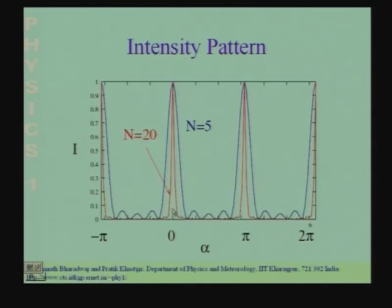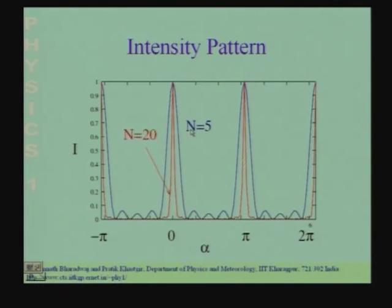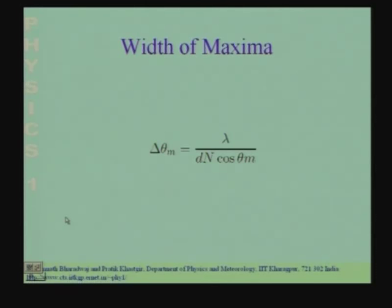The width of these primary maxima goes down as you increase the number of oscillators. If you have 5 oscillators this is the width; if you have 20, the width has gone down. In between these primary maxima you have n−1 minima, where n is the number of oscillators, and you have n−2 secondary maxima which are much smaller in intensity. Most of the radiation goes out in the primary maxima. The width of the primary maximum is Δθ = λ/(nd cos θ_m).